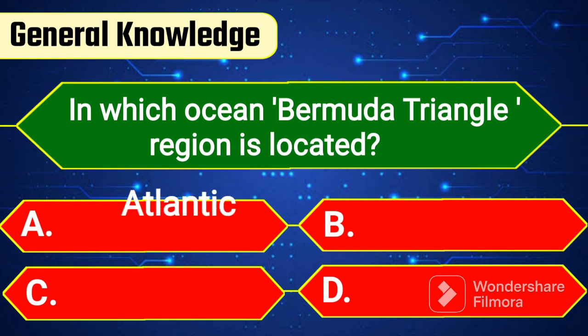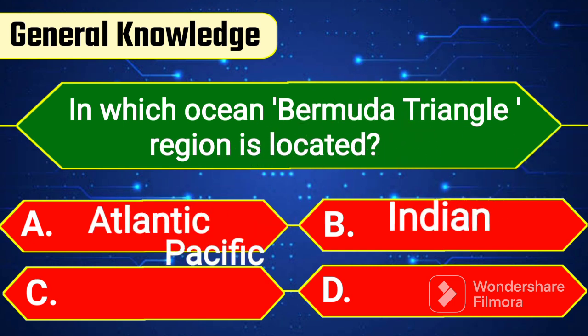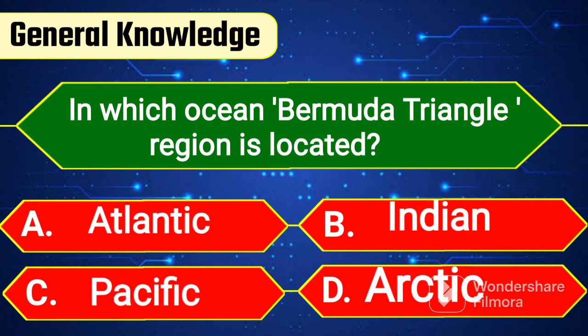In which ocean is the Bermuda Triangle region located? Option A: Atlantic. Option B: Indian. Option C: Pacific. Option D: Arctic.